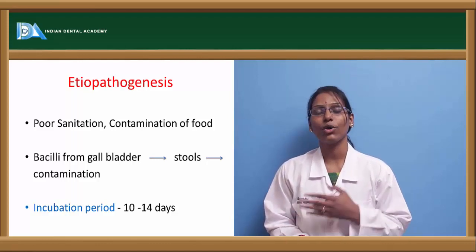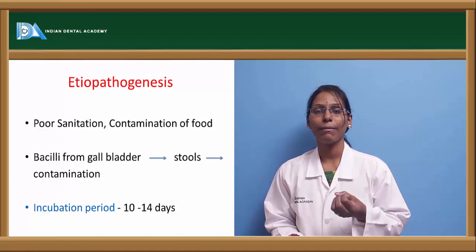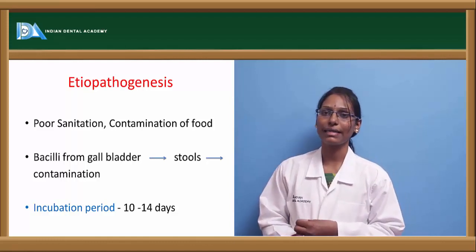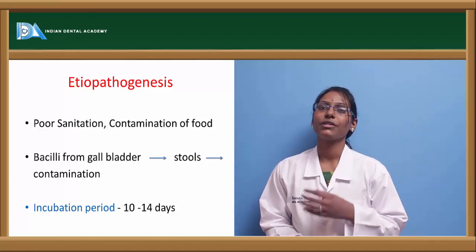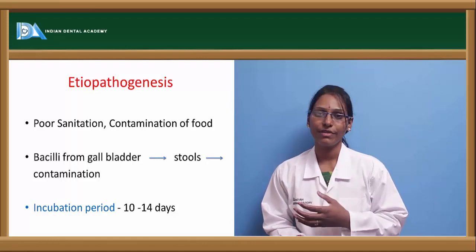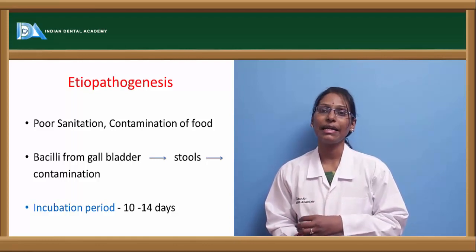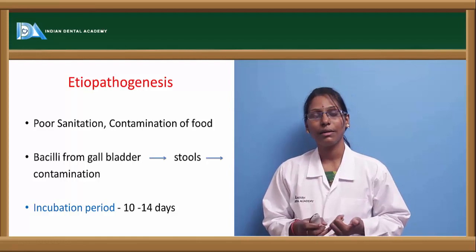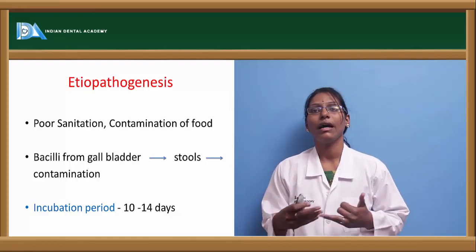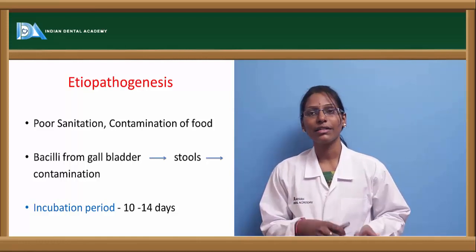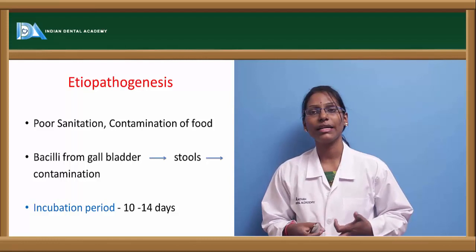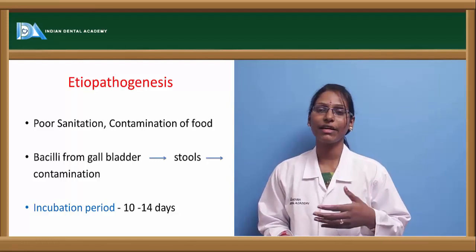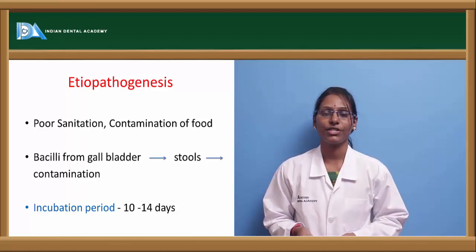At the stage of multiplication, the bacilli enter the bloodstream, causing bacteremia. In the course of severe bacteremia, the bacilli can enter into various organs such as the liver, kidneys, other lymphoid aggregates, and also the reticuloendothelial system, giving rise to various systemic manifestations.